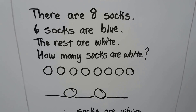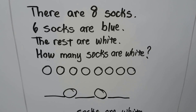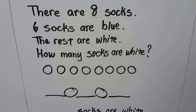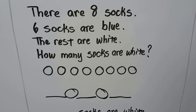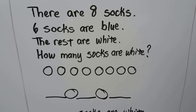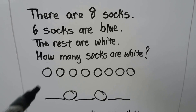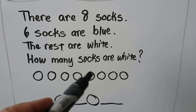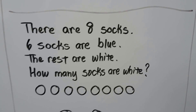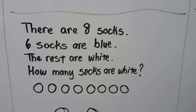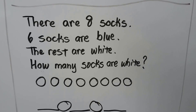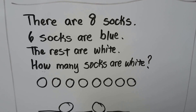There are eight socks. Six socks are blue, the rest are white. How many socks are white? We can make eight circles for the socks: one, two, three, four, five, six, seven, eight. It's telling us that six socks are blue, so we can make six of the circles blue: one, two, three, four, five, six.